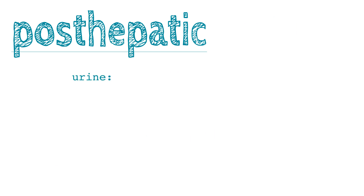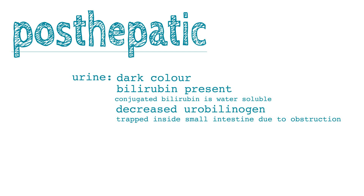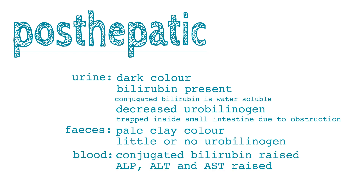Lab findings for post-hepatic jaundice: the urine is dark-coloured with bilirubin present, because conjugated bilirubin is water-soluble, and there are decreased urobilinogen levels because urobilinogen is trapped within the small intestine due to the obstruction. The faeces is pale clay-coloured with little or no urobilinogen present. The blood shows increased conjugated bilirubin, and this rise is higher than any other abnormal value on liver function tests. ALP, ALT, and AST may also be raised.